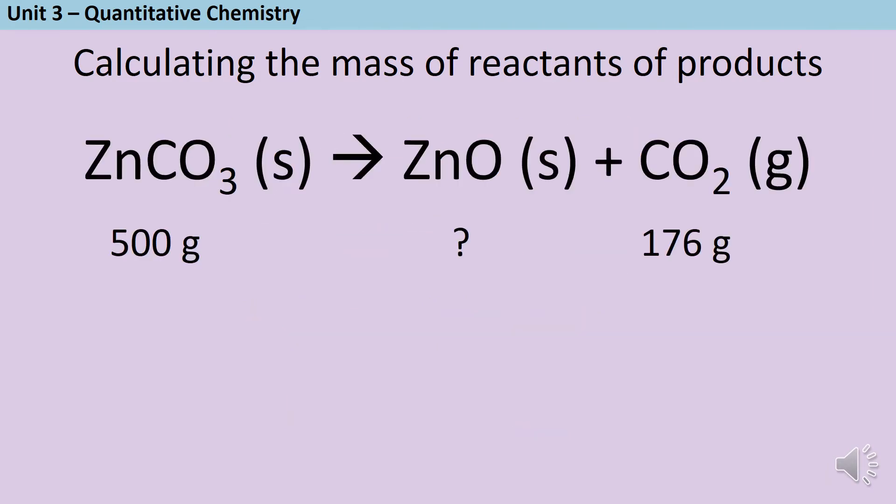In the second level of these questions, we're still missing the mass of one chemical, but this time it's not a chemical that's on its own on one side. So I still know that the mass of the reactants is equal to the mass of the products, and therefore 500 grams is equal to something plus 176. So now in order to work out what this something is, I need to do a little subtraction. So 500 take away 176 is 324 grams. And so that's how much zinc oxide I've got.